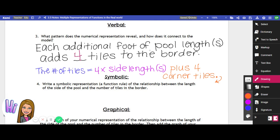It's going to add four tiles to the border because as we go up by one, you're going to be adding four more for each side length. So if we were to take the words that we had for the second part, the number of tiles is equal to four times the side length plus four corner tiles. We could call the number of tiles, we could call that T.